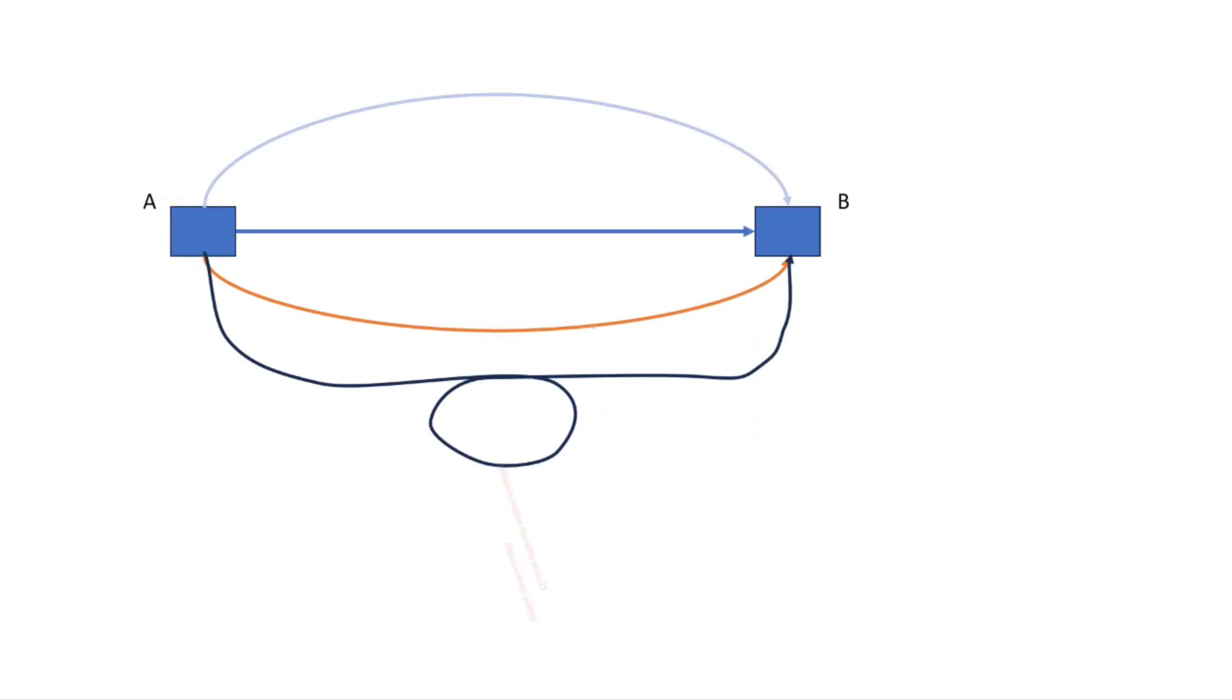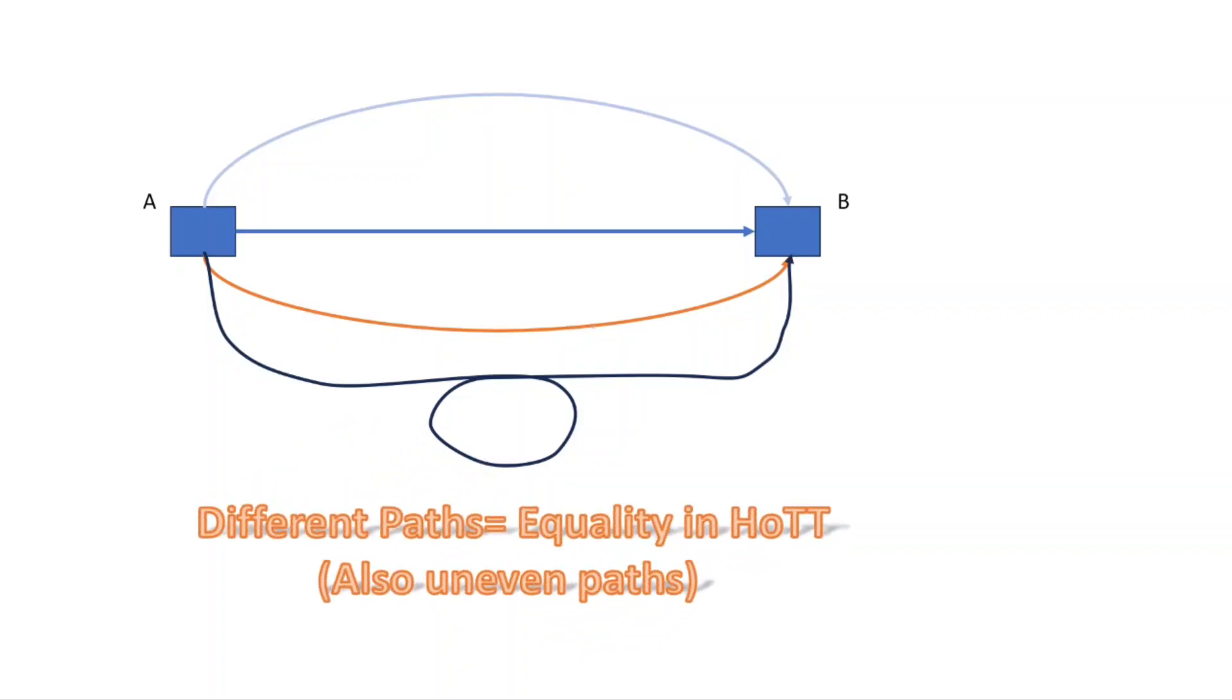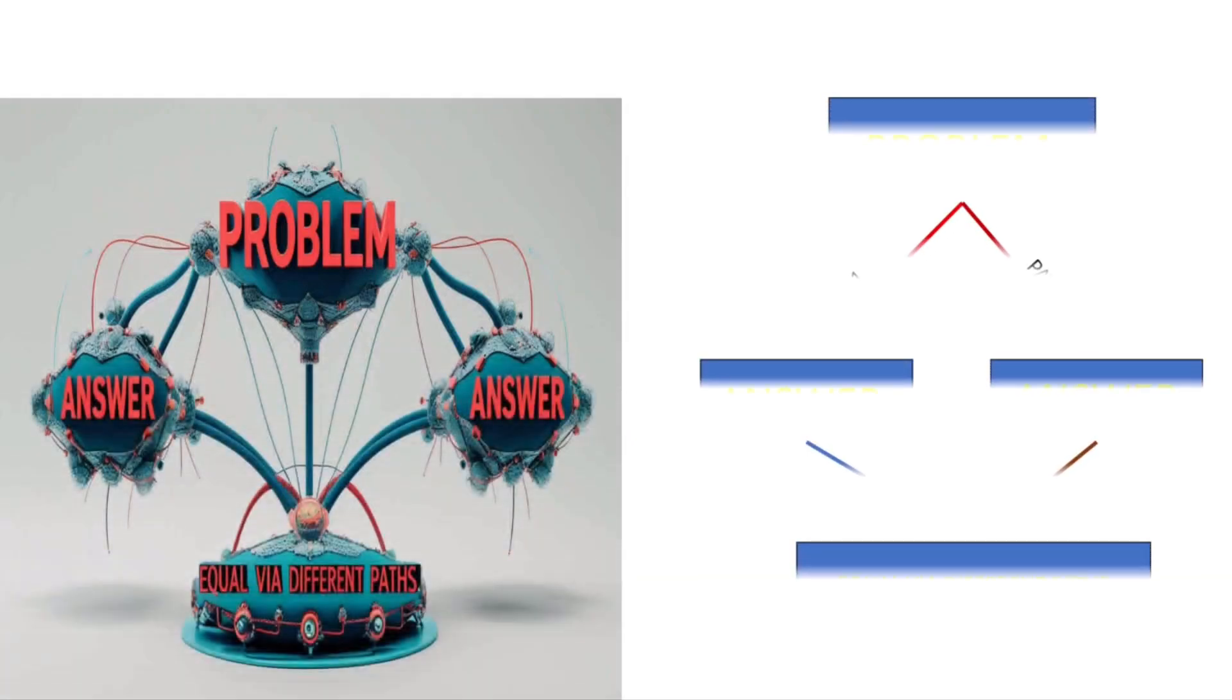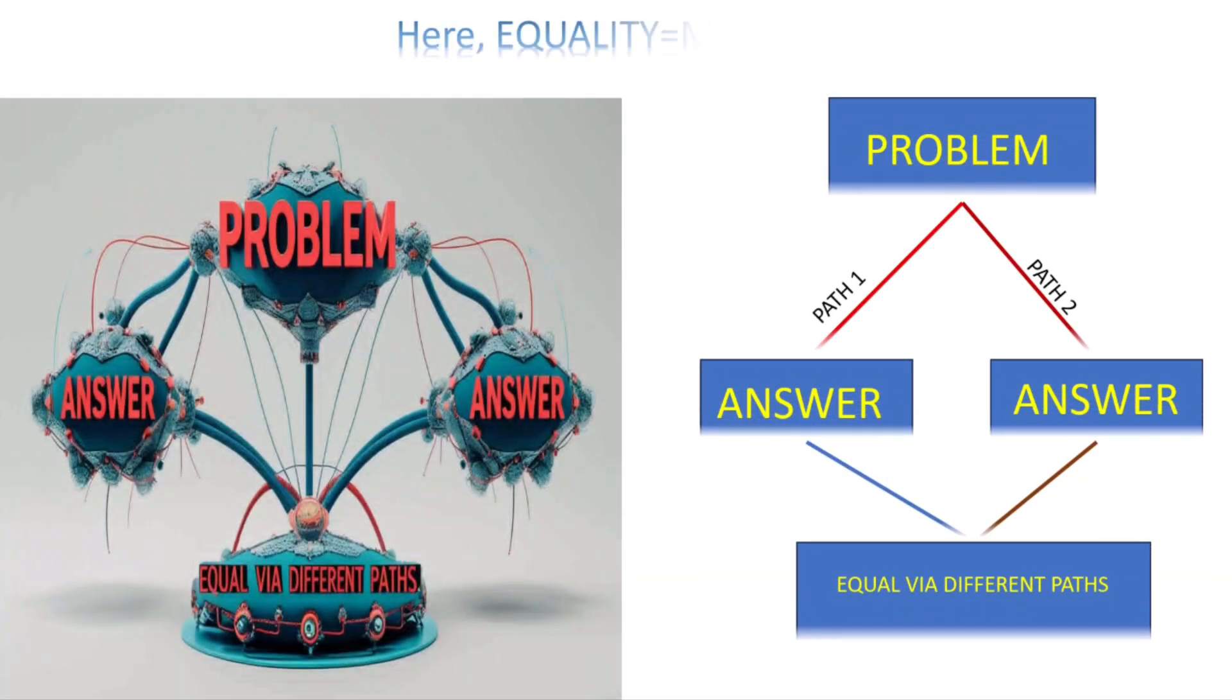Instead of just saying if two things are identical, it asks how many ways can you get from one place to another. To put it in another way, in homotopy type theory, if you solve a problem in two different ways, each method is a path.